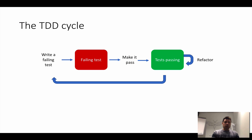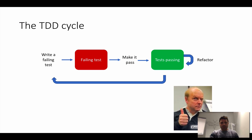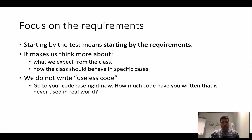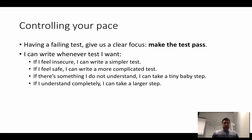So this is the TDD cycle: write a failing test, see that it fails, make it pass, refactor, and repeat. Kent Beck, the creator of the TDD term, appreciates it, and we saw many advantages — like being focused on the requirements, because the tests are basically the requirements, describing them by means of examples. You control your pace — you can do baby steps and go as fast or as slow as you want.